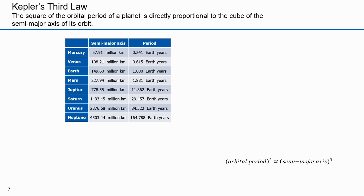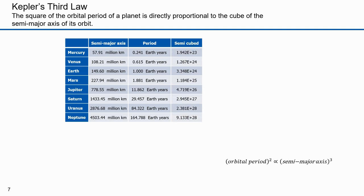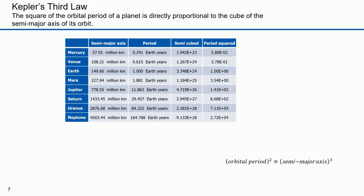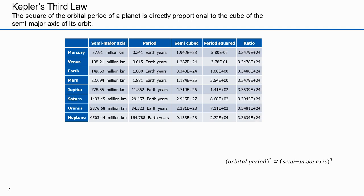Here are the orbital periods of each of the planets in Earth years. Earth's period is one Earth year. Mercury is about a quarter of a year. Neptune is just short of 165 Earth years. This column is the cube of each of the semi-major axes. Kepler's third law states that the square of the orbital period is proportional to the cube of the semi-major axis. This column is the square of each of the periods, and here's the ratio of each period squared over each semi-major axis cubed. Notice that the ratios are not precisely the same — the inner planets from Mars to Mercury are pretty close, but the outer planets are off a bit.